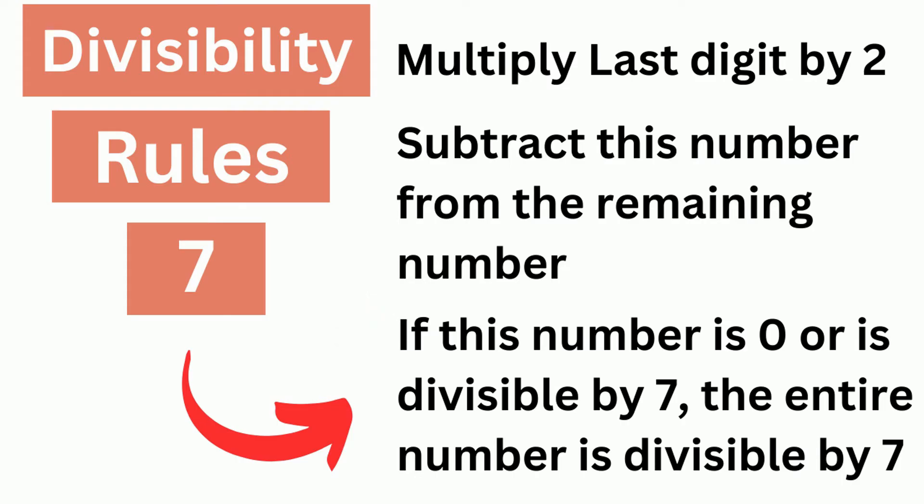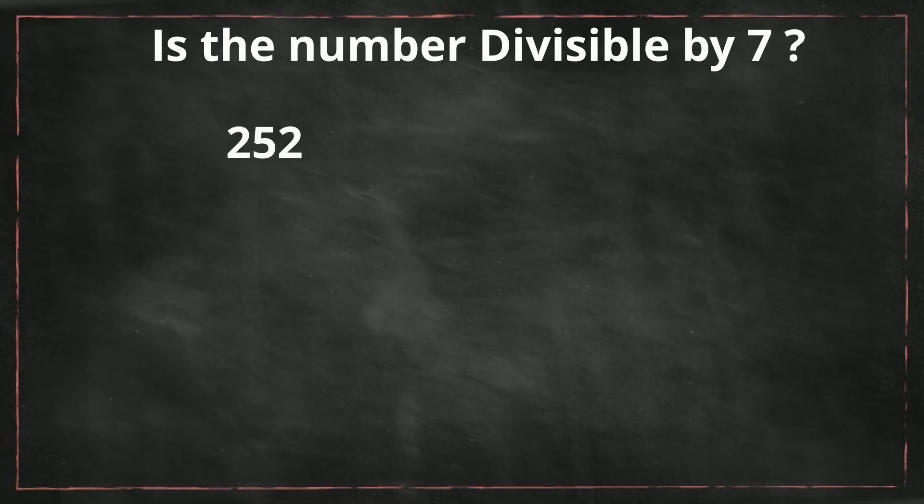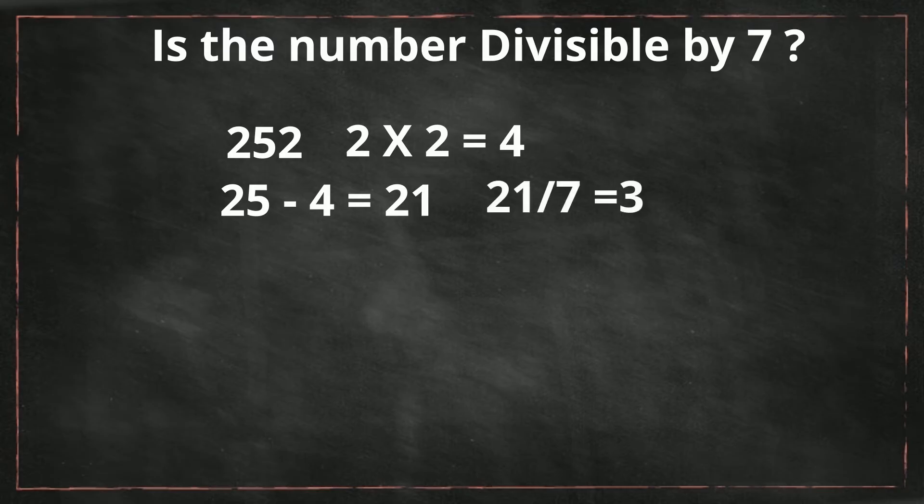Let's look at some examples. I really like this technique. We have 252. I'm going to multiply 2 times 2, which gives me 4. The remaining number is 25. 25 minus 4 is 21. Yes, 21 is divisible by 7, so the entire number is divisible by 7. And 7 goes into 252 36 times.